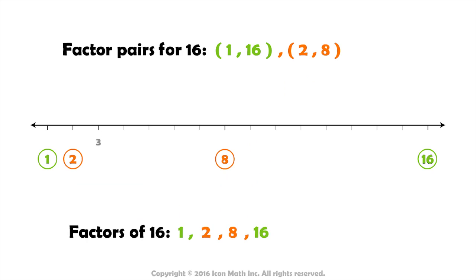Now look at the number 3. There isn't any other whole number that when multiplied by 3 we get 16. What about the number 4? We know that 4 times 4 equals 16. In other words, when we multiply number 4 by itself, we get 16. So the third factor pair for the number 16 is 4 and 4.